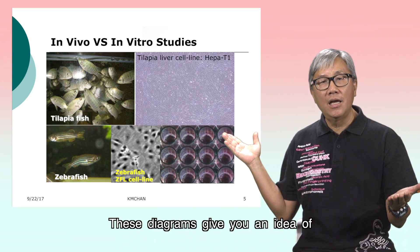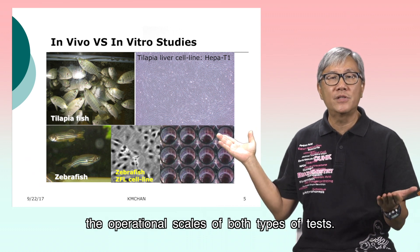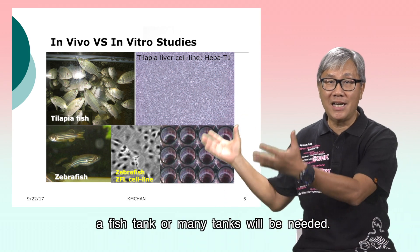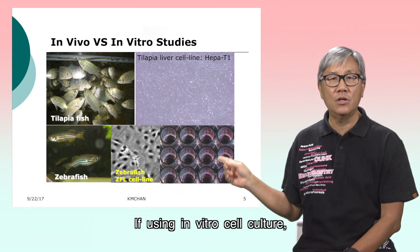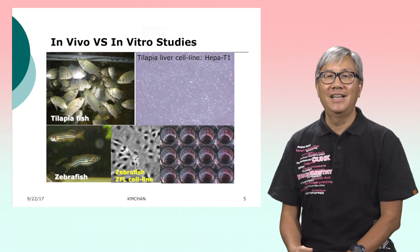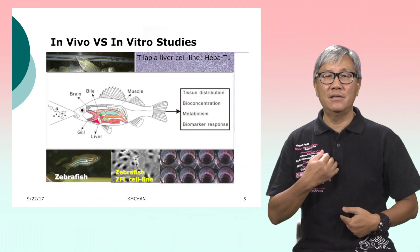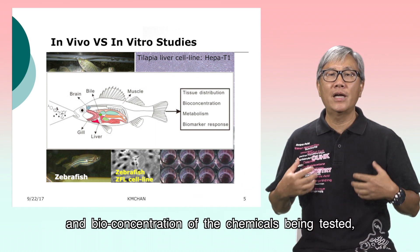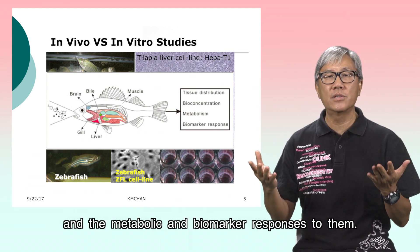These diagrams give you an idea of the operational scales of both types of tests. To study actual fish, a fish tank or many tanks will be needed. If using in vitro cell culture, only 96-well plates are needed to grow the cells. However, if whole fish are used, the various organs can be dissected to determine the distribution and bioconcentration of the chemicals being tested, and the metabolic and biomarker responses to them.